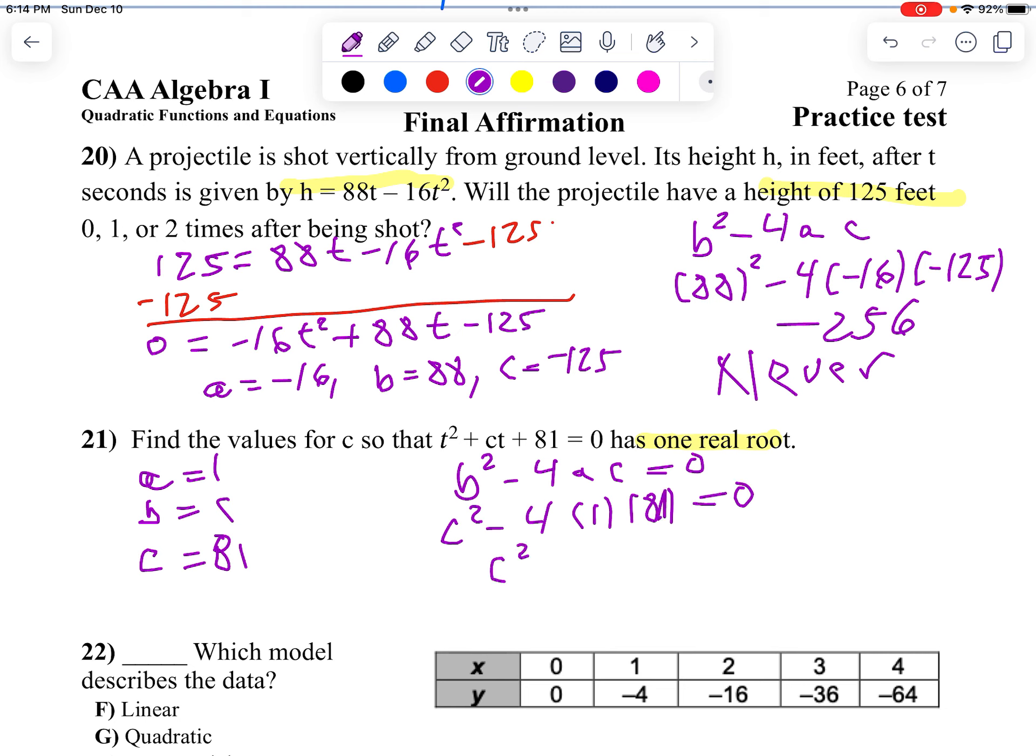So c squared minus, I should be able to do that in my head, 4 times 1 is 4, 4 times 81 is 324 equals 0. So we'll add 324 to both sides. So c squared equals 324. Take the square root of both sides. That means c, the square root of 324, remember, is plus or minus 18. And there we have our answer.